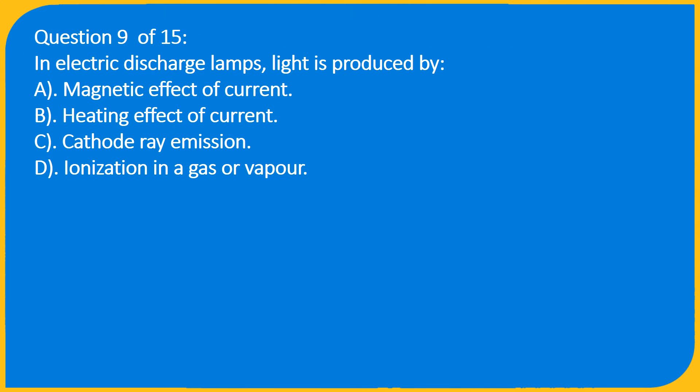Question 9 of 15: In electric discharge lamps, light is produced by A. Magnetic effect of current, B. Heating effect of current, C. Cathode ray emission, D. Ionization in a gas or vapor.